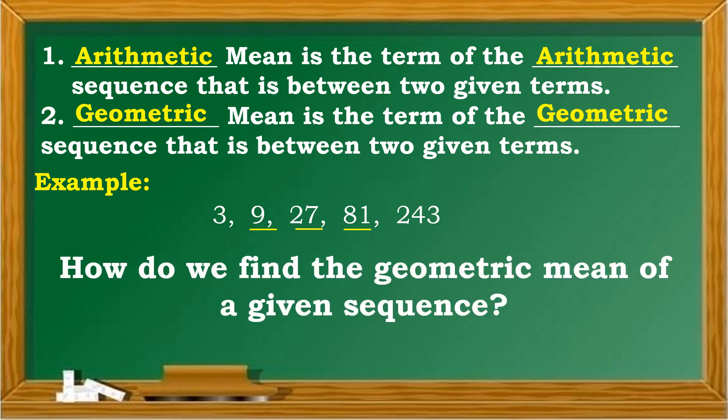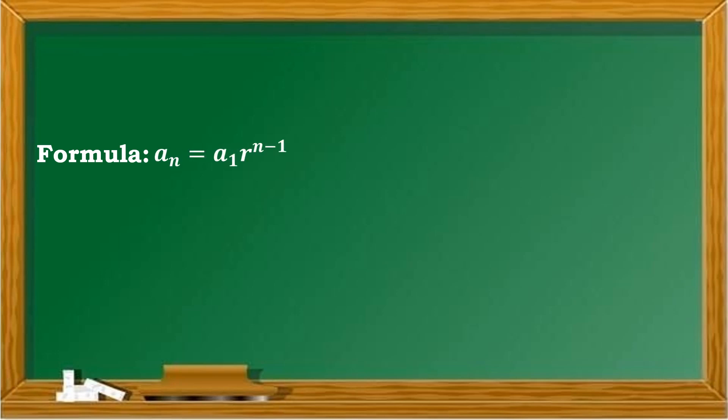How do we find the geometric mean of a given sequence? To find the geometric mean of a given sequence, we need to apply the formula used earlier: a sub n is equal to a sub 1 times r raised to n minus 1.